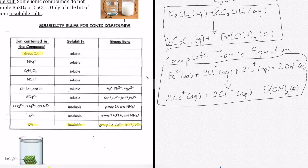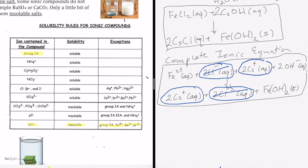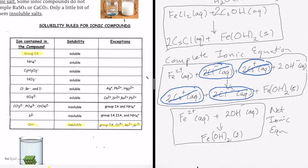At this point, I need to highlight my spectator ions and cancel them out. I can see that Cl- exists in both sides of the equation with the same number, so I'm going to cancel those out. Cesium also exists in both sides, so I'm going to cancel that out as well. That leaves me with my net ionic equation, which is just Fe2+ aqueous plus 2 OH- aqueous forming Fe(OH)2 solid.